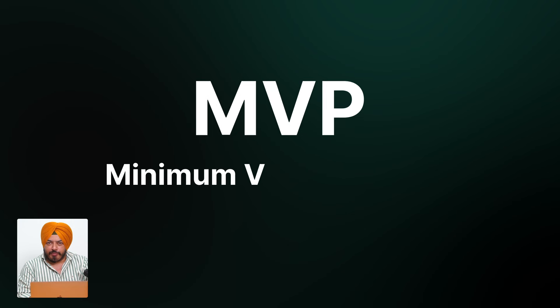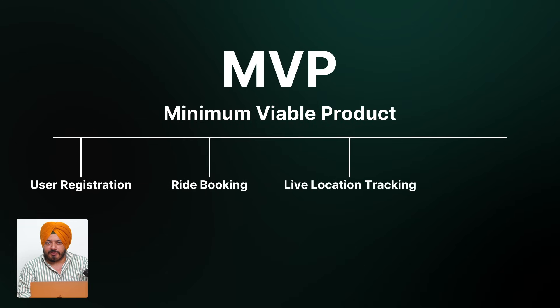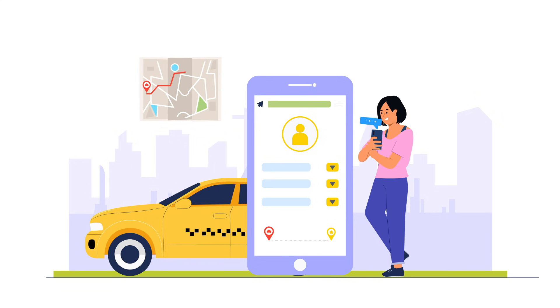The good news — you don't need to build everything on day one. What we'd always recommend is to start with an MVP: your minimum viable product, just the essentials — user registration, ride booking, live location tracking, and payments. This version could be built and launched within six to eight weeks. Once you're live in one area or city, that's when real feedback starts coming in. You'll know exactly what your customers love, what frustrates them, and what features they're asking for. That's when you iterate, enhance, add AI-powered tools, and optimize based on data, not guesses.